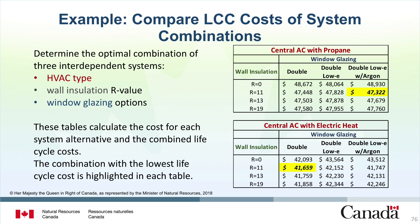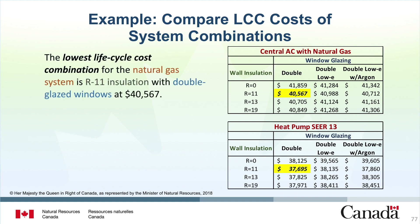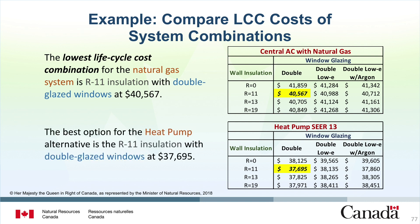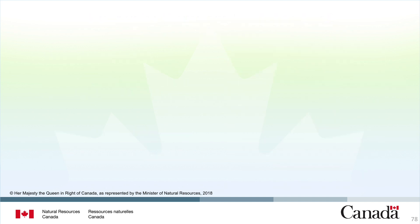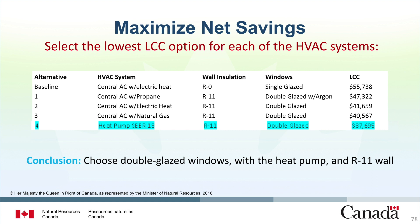For window glazing, we will consider three options: double glazed, double glazed with low-E, and double glazed with low-E and argon gas fill. These tables calculate the cost for each system alternative and the combined lifecycle costs, with the combination with the lowest lifecycle cost highlighted in bold. For the first system — central AC with propane — the best option is R11 wall insulation and double pane windows with argon fill at a cost of $47,322. For central air conditioning with electric heat, the best option is R11 wall insulation with double glazed windows at a cost of $41,659. For the natural gas system, the best option is R11 insulation with double glazed windows at $40,567. The best option for the heat pump alternative is R11 insulation with double glazed windows at $37,695, the lowest of all available options — therefore this is the optimal combination to select.